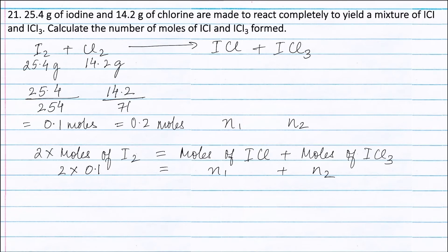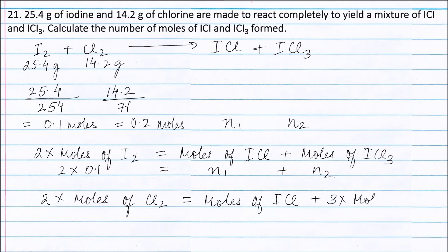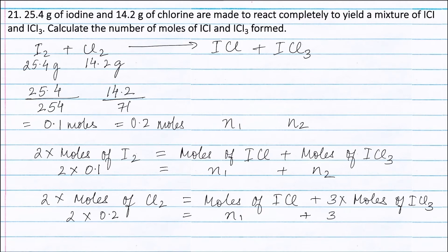Applying the principle of atom conservation on chlorine atoms: 1 mole of Cl2 contains 2 moles of chlorine atoms. 1 mole of ICl contains 1 mole of chlorine atoms and 1 mole of ICl3 contains 3 moles of chlorine atoms. So: 2 × 0.2 = N1 + 3N2, giving 0.4 = N1 + 3N2.